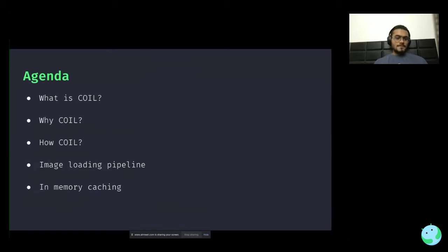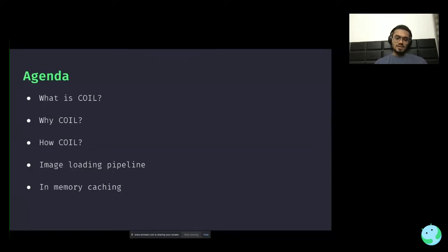So what we will be discussing today: we'll first focus on what COIL exactly is, why you should consider this library, and then we'll see how you can use this library with APIs for Java and Kotlin. Later on, we'll deep dive into the pipeline itself, and finally we'll touch upon the in-memory caching.